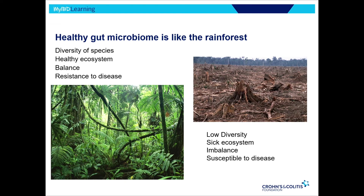The healthy microbiome is like the rainforest: there's a whole bunch of different plants, animals, species, and insects in great balance — resistant to invaders or disease, and considered healthy. When your microbiome is unhealthy, think of a rainforest compromised by deforestation or chemicals thrown on it: the diversity is lower, the ecosystem is sick and imbalanced, and it's more susceptible to disease.